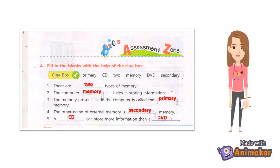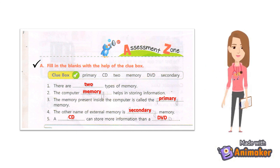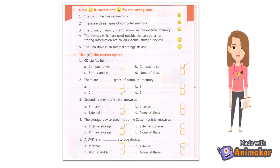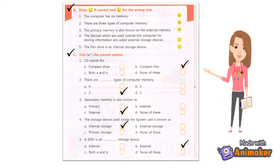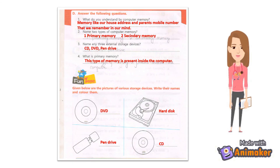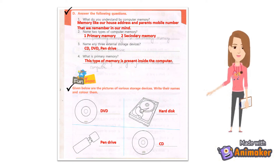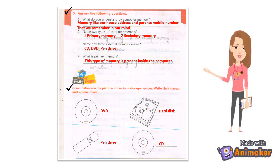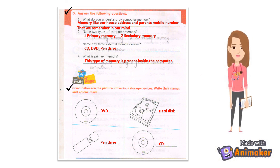Exercises: A) Fill in the blanks with the help of the clue box. B) Draw a tick if correct and a cross for the wrong one. C) Tick the correct option. D) Answer the following questions. Given below are the pictures of various storage devices — write their names and color them.